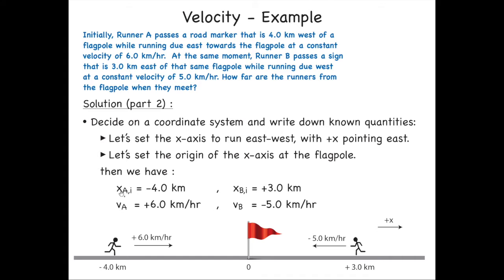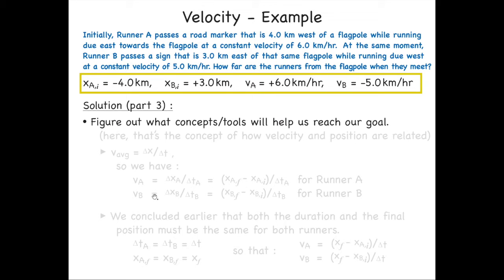Because if we do this, then we have the initial position xai, meaning position of runner A initially, is 4 kilometers to the west, which would be in the negative direction, so minus 4 kilometers, and he or she is running with a velocity of 6 kilometers per hour. Runner B, his position initially is at plus 3 kilometers to the right there, and he's running with a velocity of minus 5 kilometers per hour because he's running in the negative x direction, whereas runner A was running in the positive x direction and had a positive velocity.